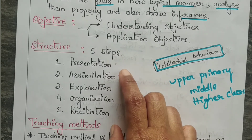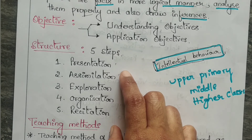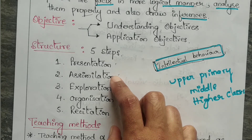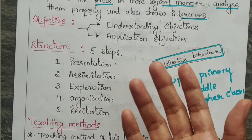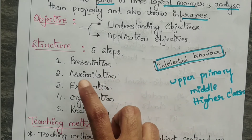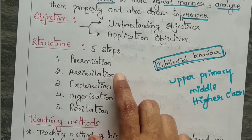The second step is assimilation. Here the teacher should give generalizations and provide individual activities, such as working in a library, working in a laboratory, or testing of the content.